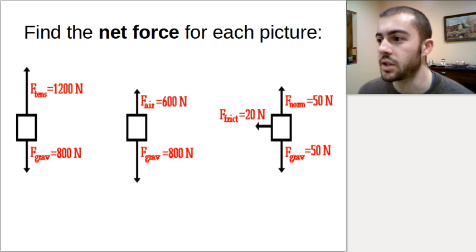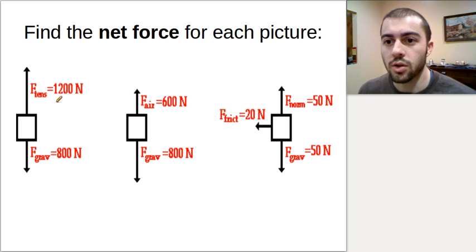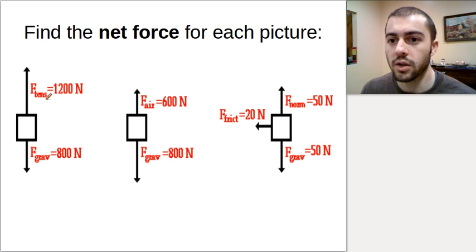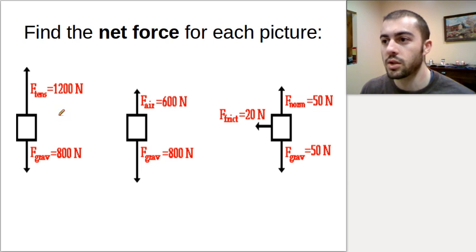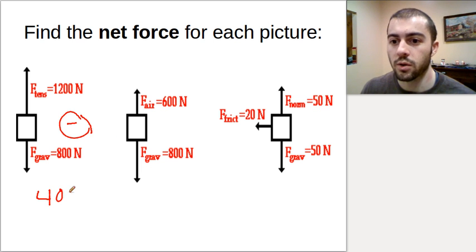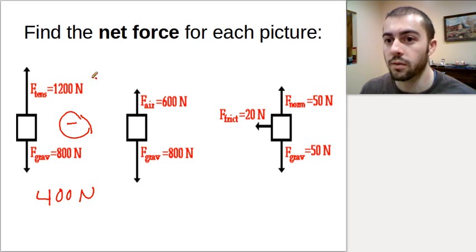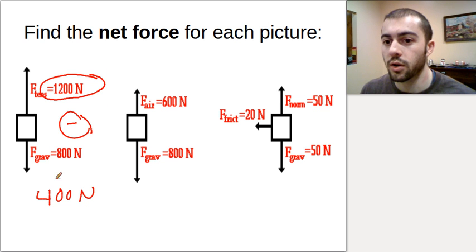Here are a couple of examples - pause the video and try these on your own to find the net force in each case. To find the net force in the example on the left, these are going in opposite directions, so we need to subtract them. When we subtract these forces, we get a net force of 400 newtons. To decide what direction the net force is going, we see what the bigger force is - the bigger force wins out. That would be 1,200 newtons, so the net force here would be going upwards.